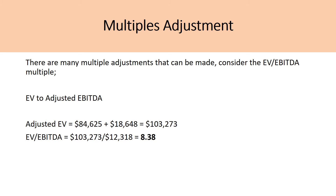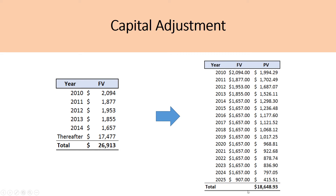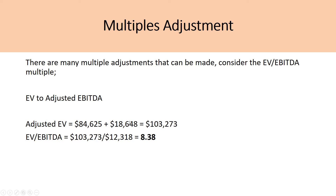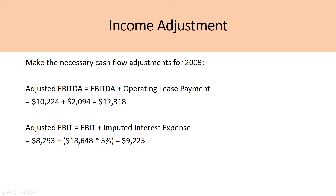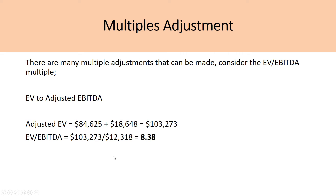Now, what about the multiples adjustment? There are many multiples you can adjust, but let's look at the EV to adjusted EBITDA multiple. We are assuming that enterprise value is $84,625 million. We take the present value of the operating lease, treat it as equivalent to debt, and add it to enterprise value to get $103,273 million. With our previously adjusted EBITDA of $12,318 million, we calculate a new adjusted EV to EBITDA multiple of 8.38.